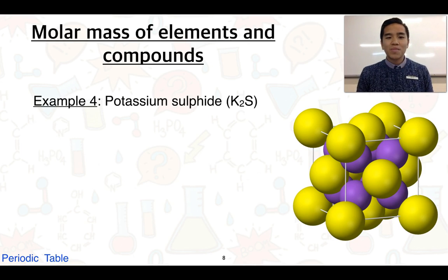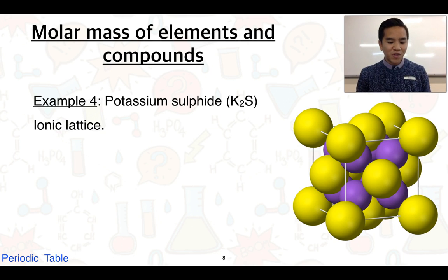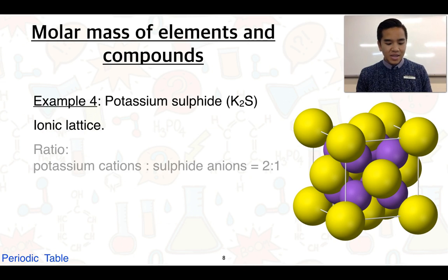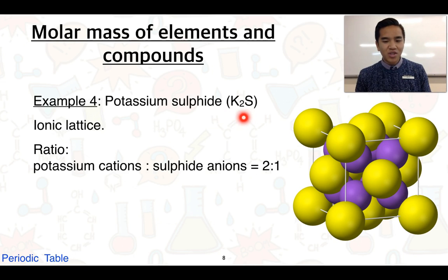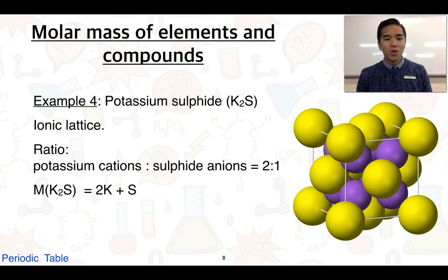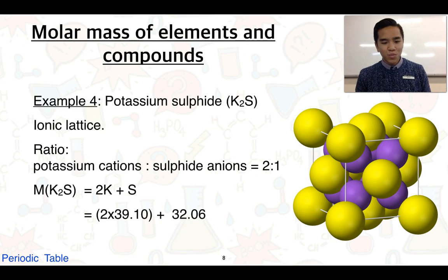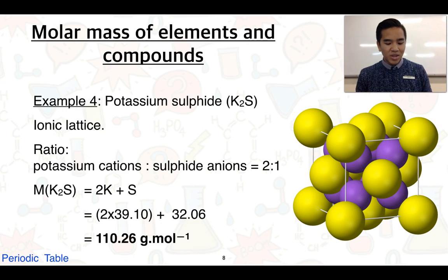One more example — potassium sulfide. This is an ionic compound, so potassium sulfide consists of a lattice structure. The formula K₂S tells us the ratio of potassium to sulfide ions: for every two potassium ions, we have one sulfide ion. When we work out the molar mass, we have two potassiums added to one sulfur. Looking up the relative atomic masses on our periodic table and plugging the numbers in, we end up with a value of 110.26 grams per mole.